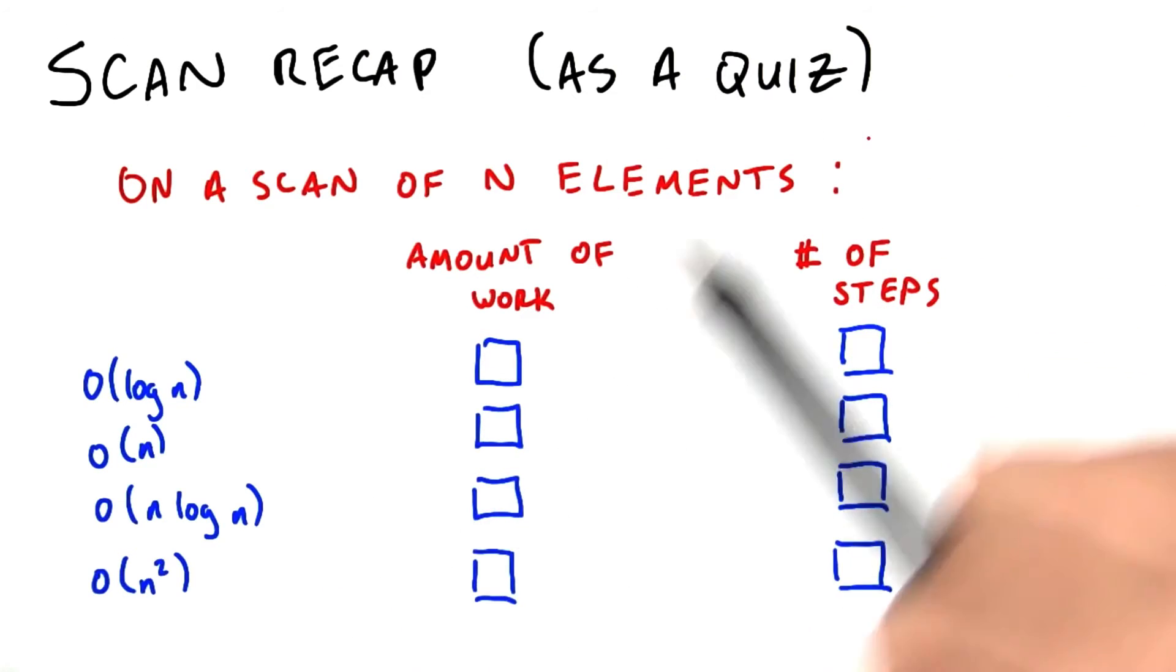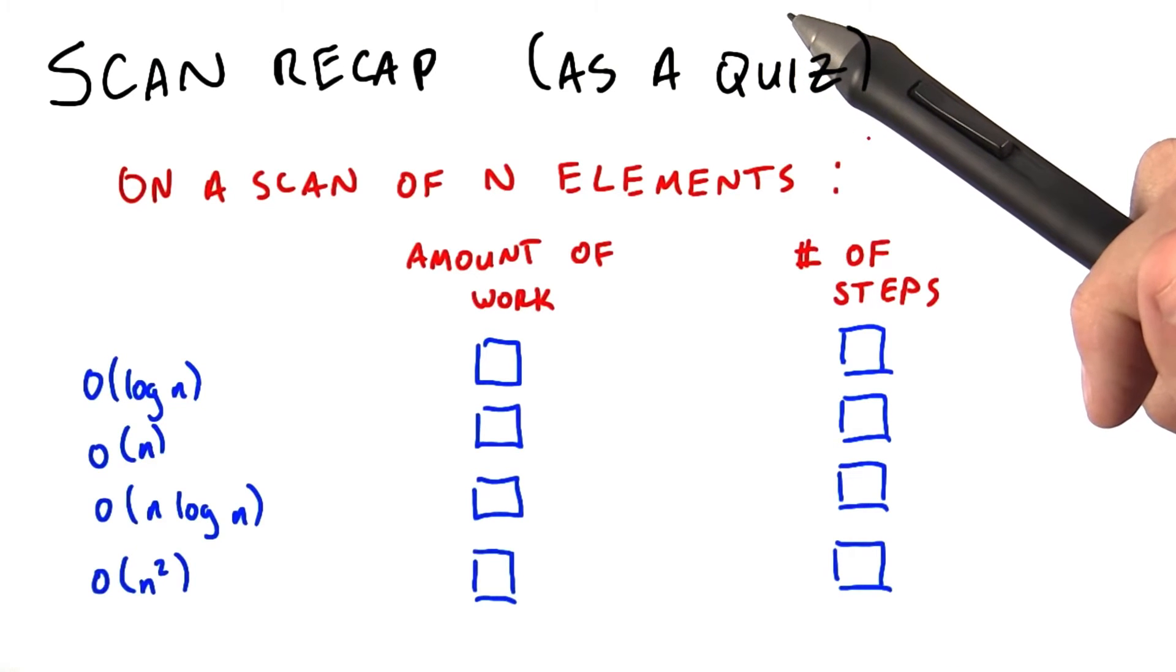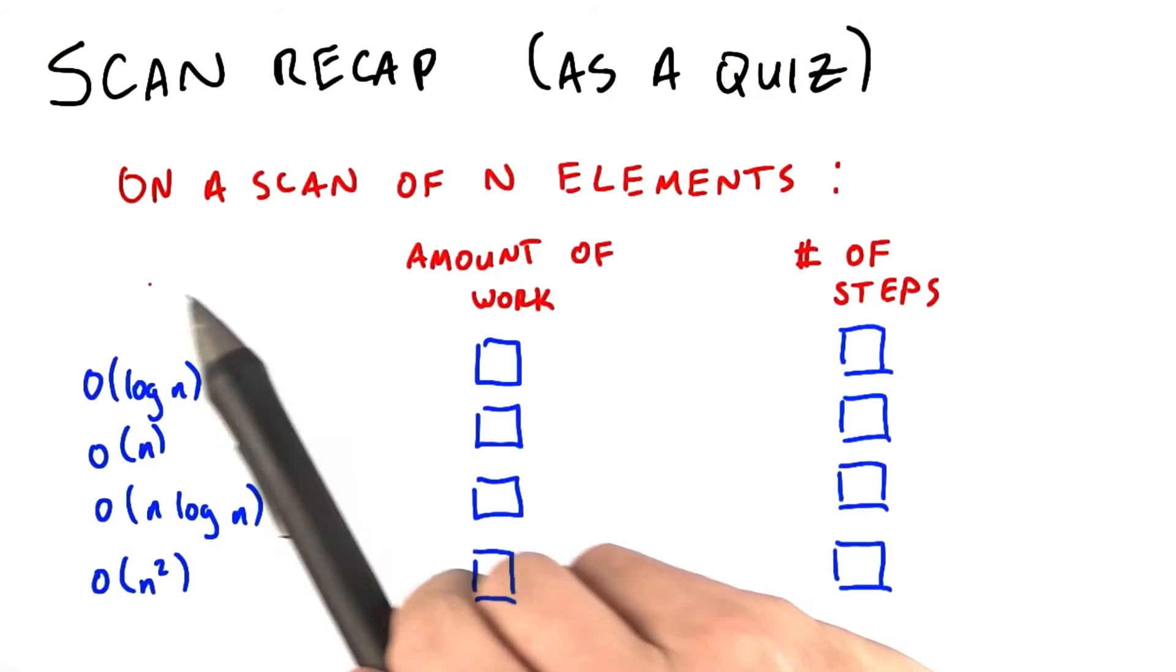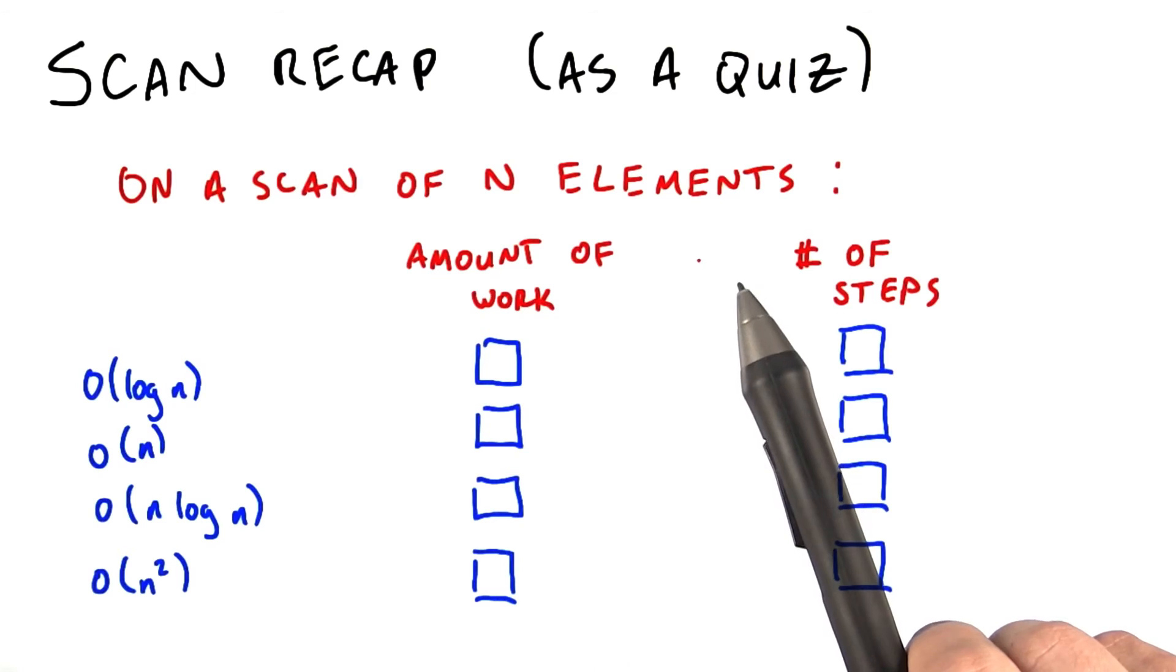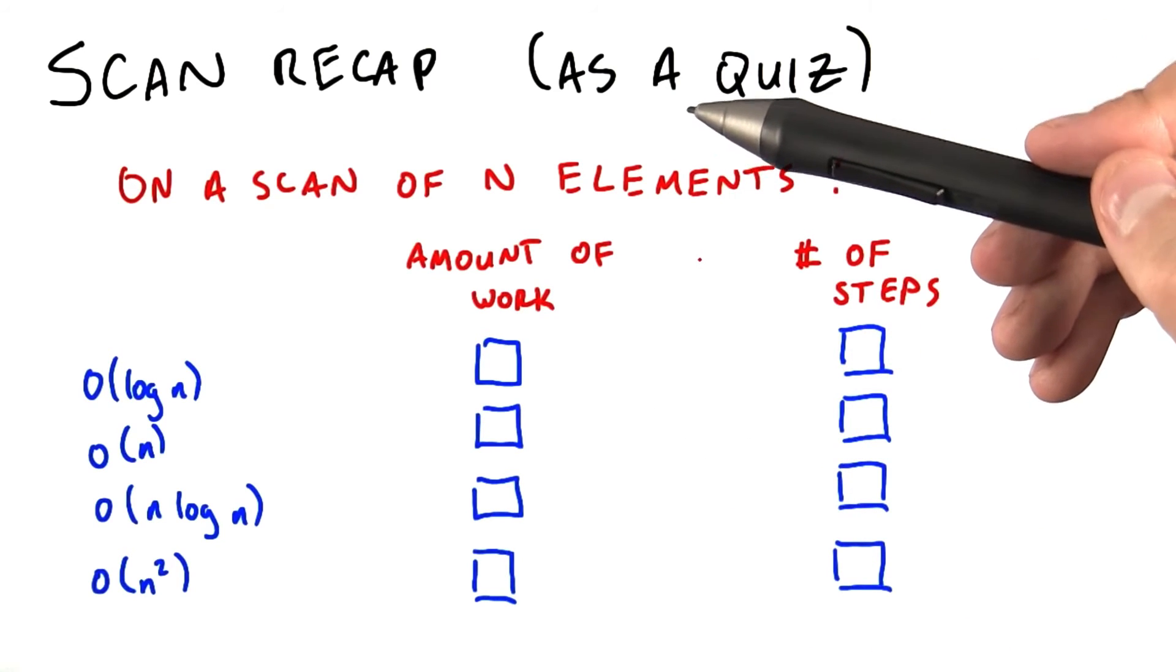So, as a quiz, let's recall two of the important properties of Scan. We're looking at a scan of n elements, and in the best GPU scan implementations, what is the amount of work to do the scan?